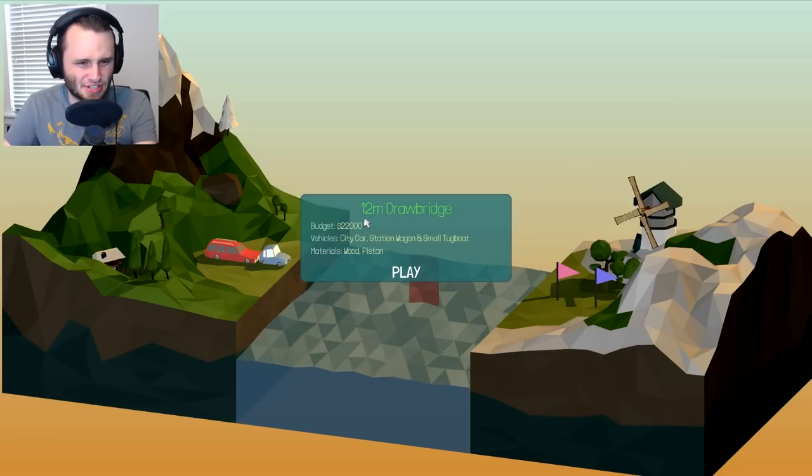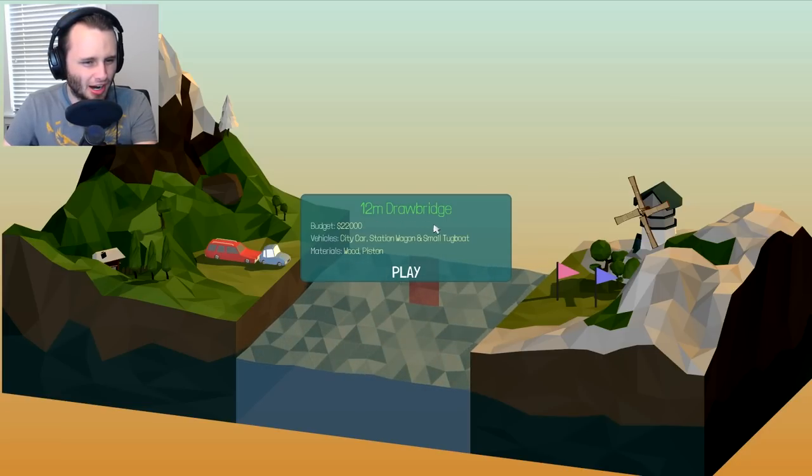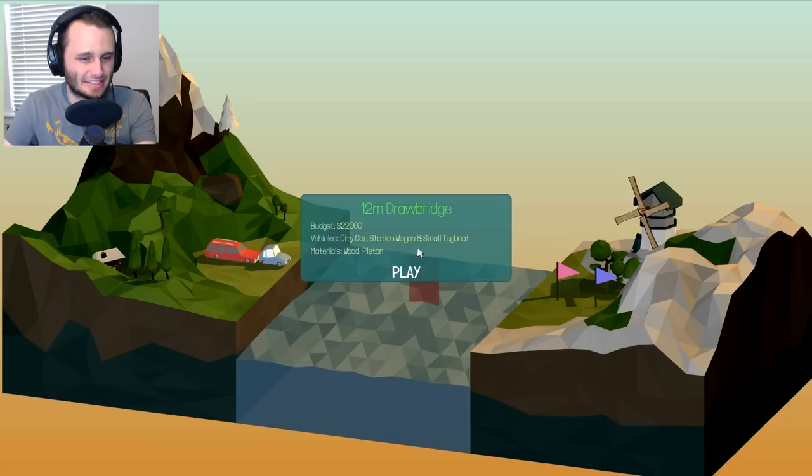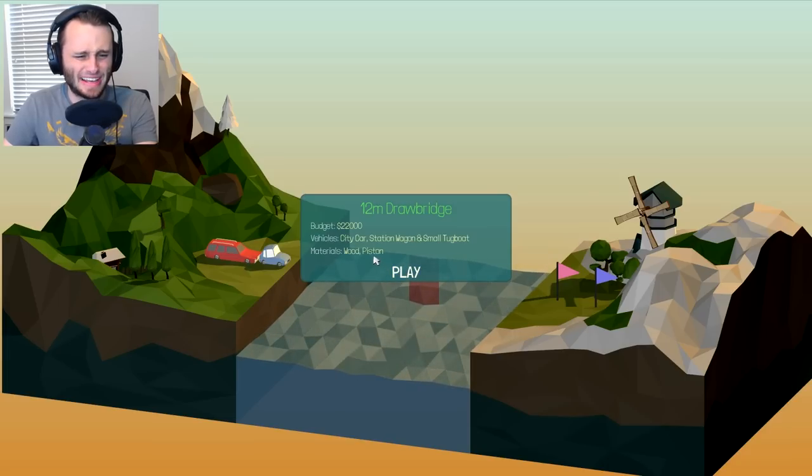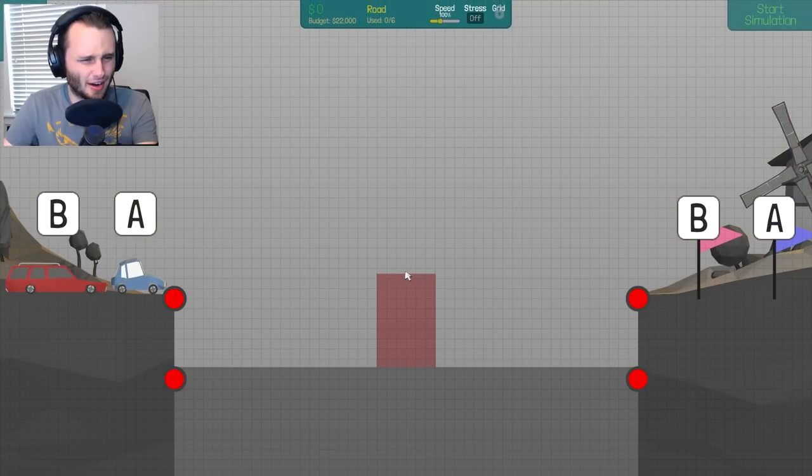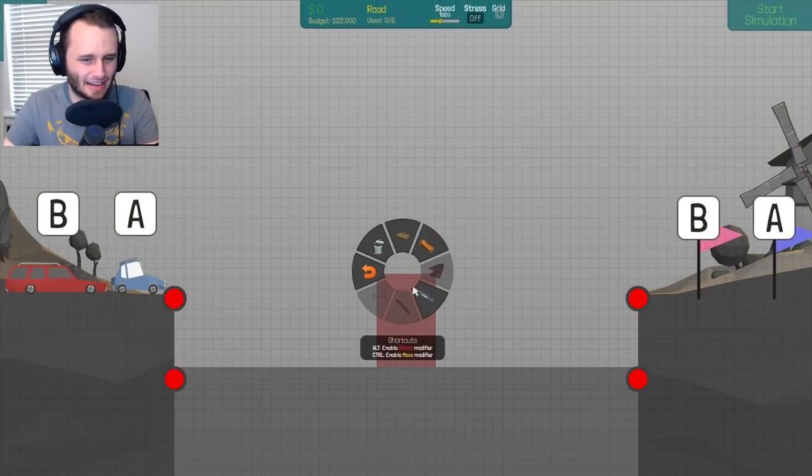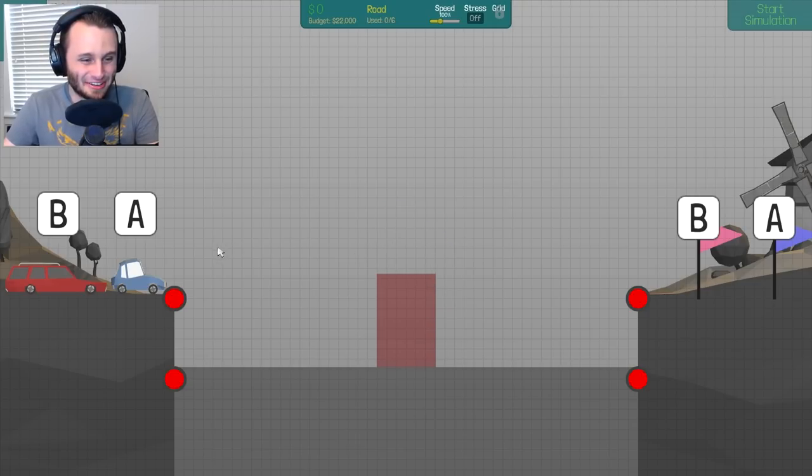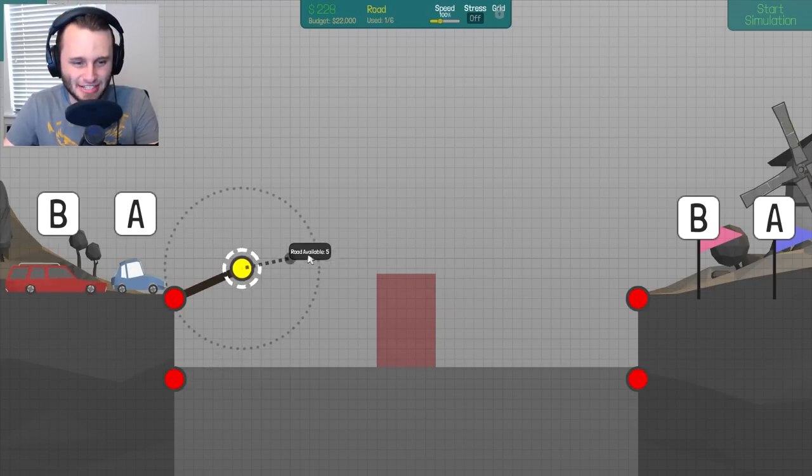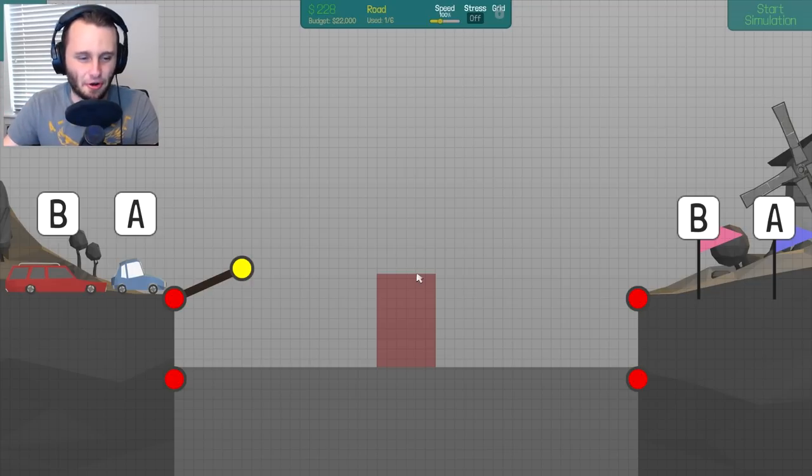Okay, so it says this one is a 12 meter drawbridge. Our budget is $22,000. We can use a piston? Wait, what the heck is a piston? Oh, we have a hydraulic lift! How the crap do you use this?